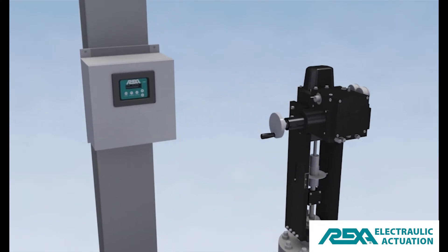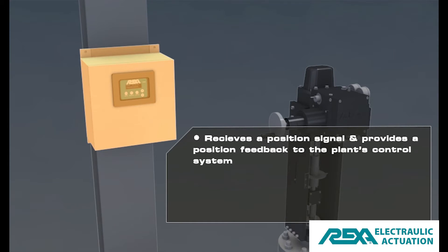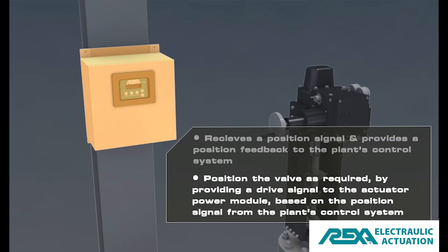The REXA actuator interface with the plant's control system is the local control enclosure, or PCP. The control enclosure receives a position signal and provides a position feedback to the plant's control system. Its other function is to position the valve as required by providing a drive signal to the actuator power module based on the position signal from the plant's control system compared to position feedback from the actuator's cylinder.